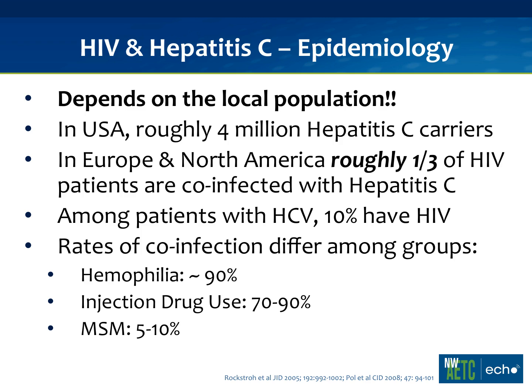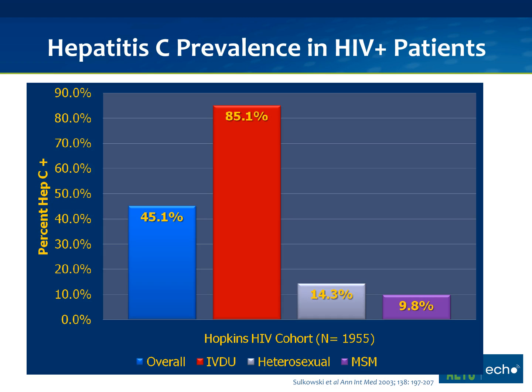It really depends on risk factors. For those exposed to a lot of blood products — like hemophiliacs — the seroprevalence and co-infection is 90%. Injection drug users: 70–90%. MSM itself: 5–10%. Data from the Johns Hopkins cohort in Baltimore shows that 45% of HIV patients also had hepatitis C. If you were an injection drug user, it was 85%; heterosexual, 14%; and MSM around 10%. Co-infection rates of 30–40% are not uncommon on the East Coast, while San Francisco, San Diego, and Seattle are around 20%.